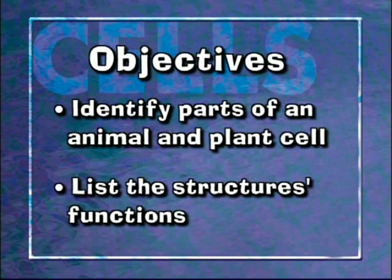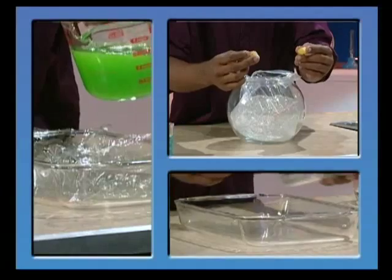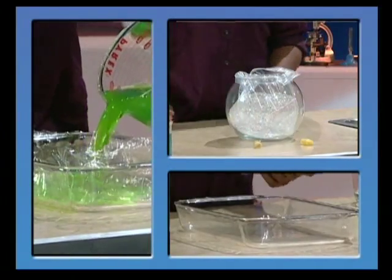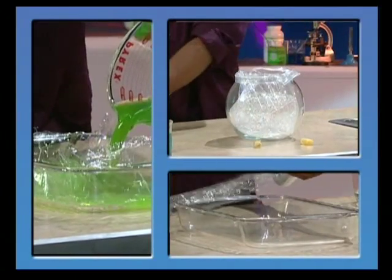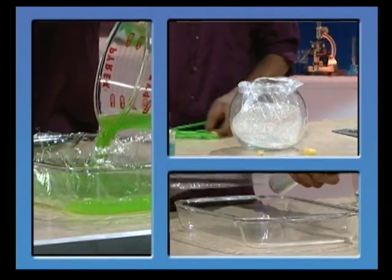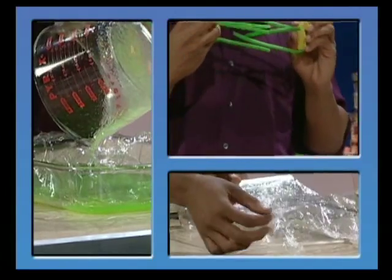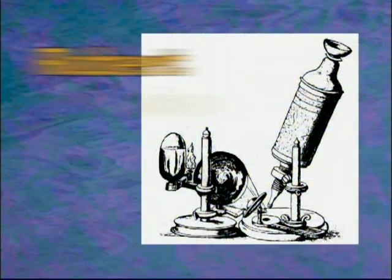We're also going to show you how to build a cell model. It's a great way to see that cells are three-dimensional structures — they certainly don't look that way through a microscope, and they didn't look three-dimensional when Robert Hooke, an English physicist in the 1600s, saw them.